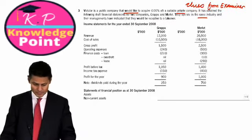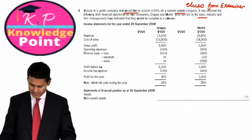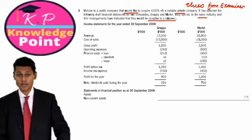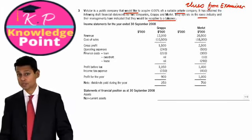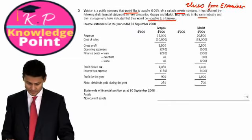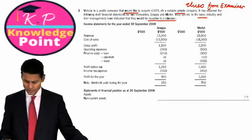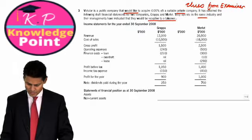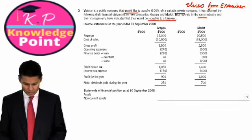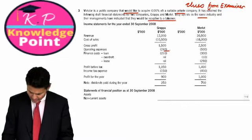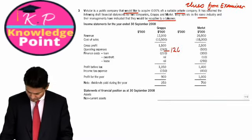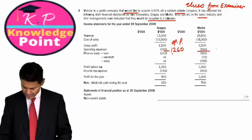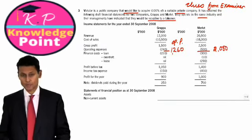In the same industry, so they're comparable. Their managements have indicated that they would be receptive to a takeover. So you've got a question called Grappa and Merlot. There's revenue, cost of sales, gross profit, operating expenses. What is the operating profit around here? Is that 1260? So that's the operating profit. And similarly here, I can call that 2000 as operating profit.